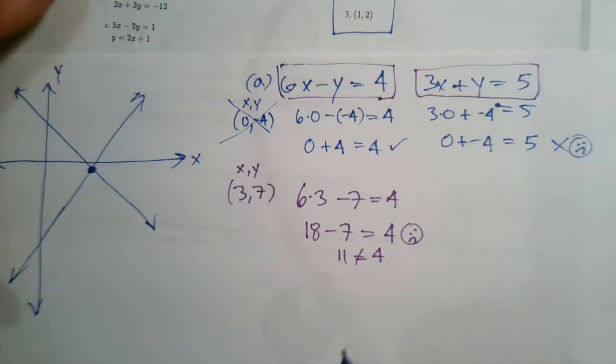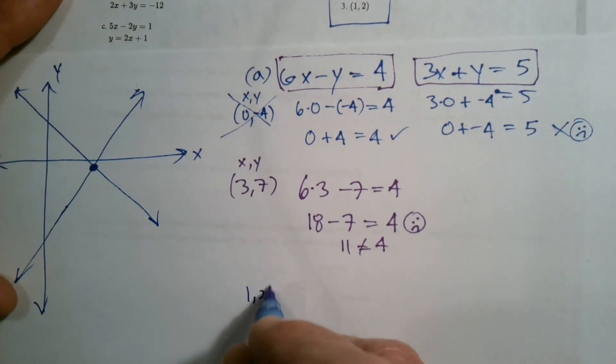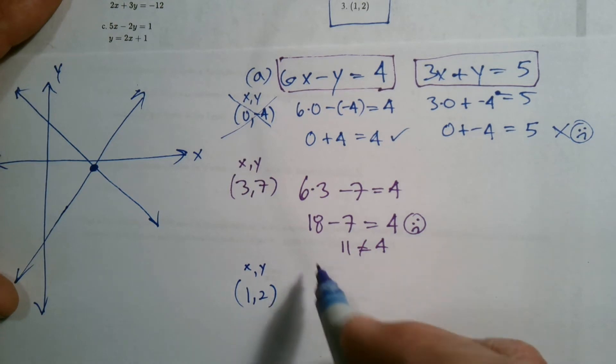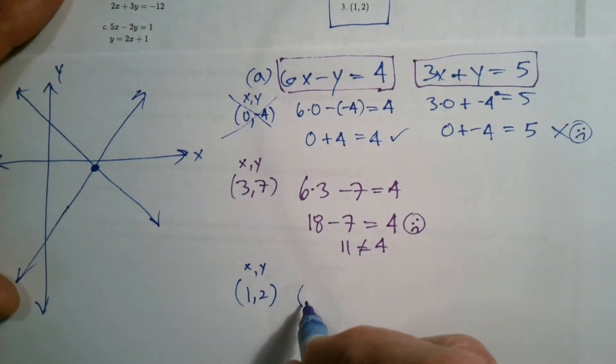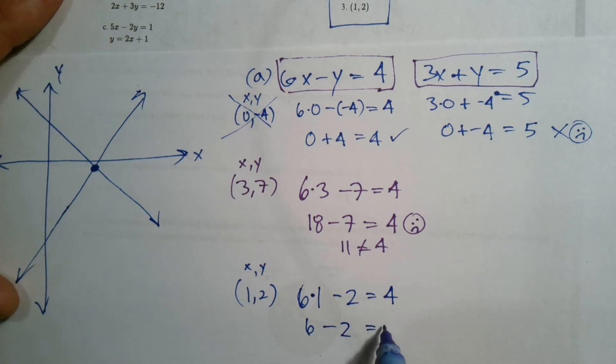So let me check the last one. The last one is 1 comma 2. So again, that's my x, that's my y. So I'm going back into the original equation. So 6 times 1 minus 2, does that equal 4? So 6 times 1 is 6. 6 minus 2 equals 4. So that does check out. 6 minus 2 is 4.